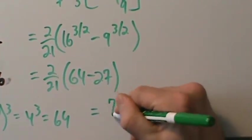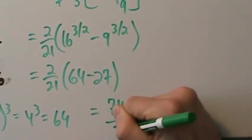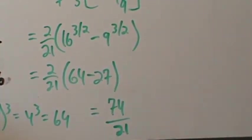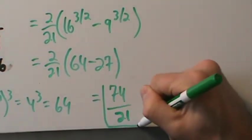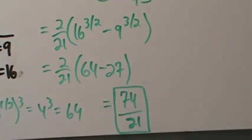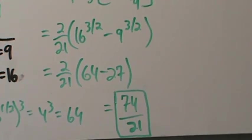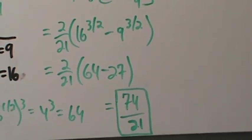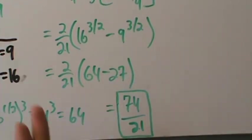The final answer is 74/21. Kind of messy algebra, but not too bad — it really could be a lot worse. With integration by substitution you'll sometimes get goofy numbers like this. Anyway, that's example 3 done one way — now there's another way.